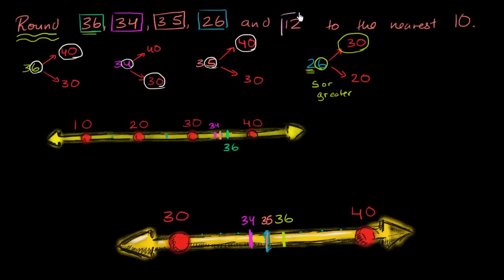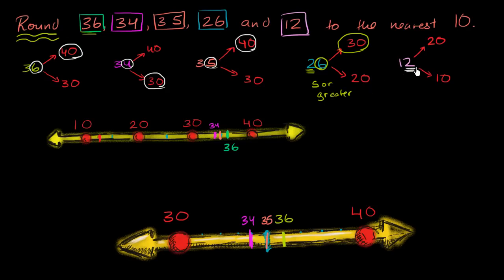Now what about 12? I think you're getting the hang of this. The multiple of 10 above 12 is 20 and the multiple of 10 below 12 is 10. We look at the ones place, which is 2. That's less than five, so since it's less than five we round down — which makes sense because 12 is also closer to 10 than it is to 20. Rounding 12 to the nearest 10, you get 10.